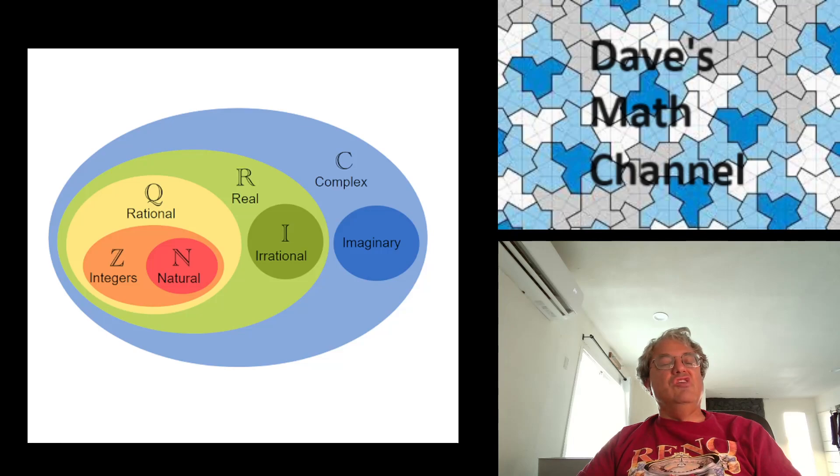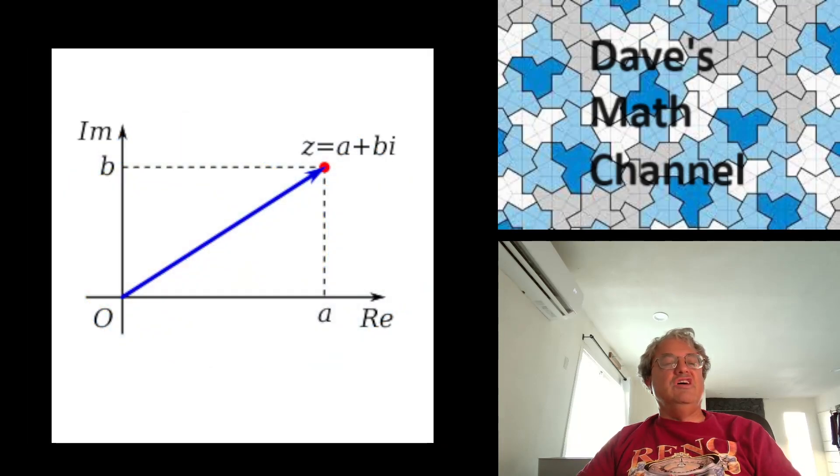But then you've got another set of numbers I just talked about, complex numbers. And those consist of real numbers, the green stuff, and imaginary numbers, which I just explained. So that's a bigger set of numbers. Anyway, how do we visualize these?